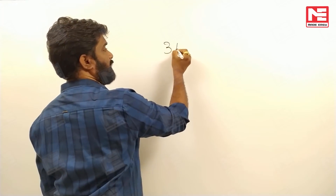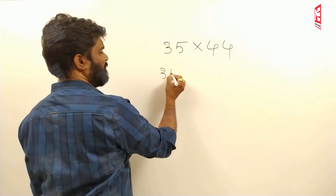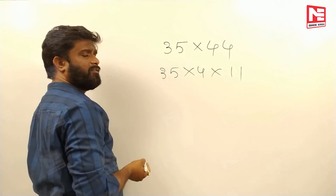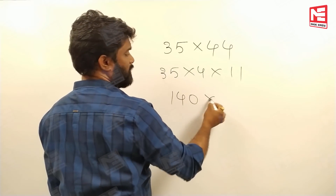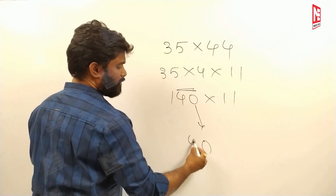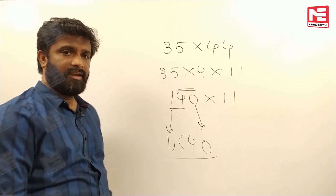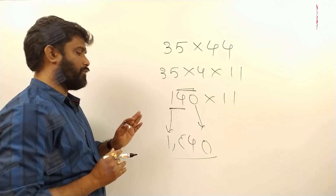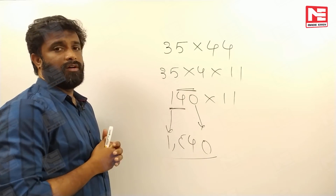For 35 into 44: make 35 four times — 35 times 4 is 140. Then 140 into 11: 0 as it is, 4 plus 0 is 4, 1 plus 4 is 5, 1 as it is — your answer is 1540. That is the product of 35 into 44.